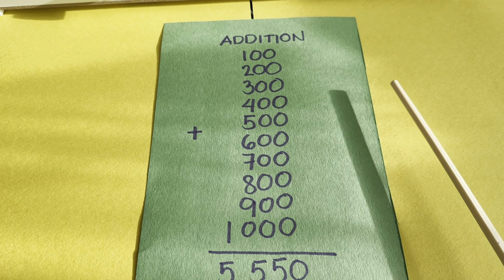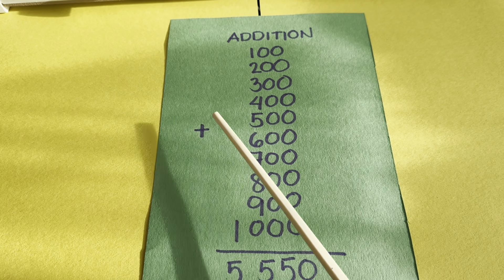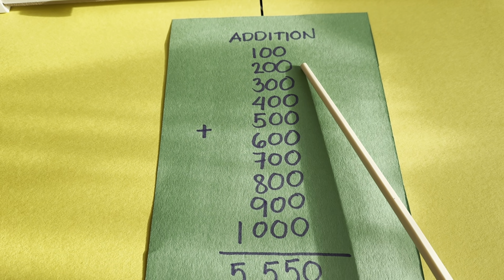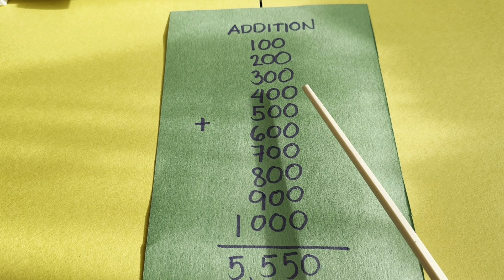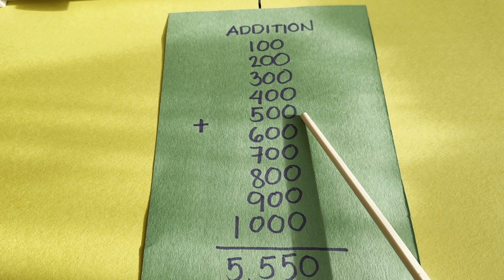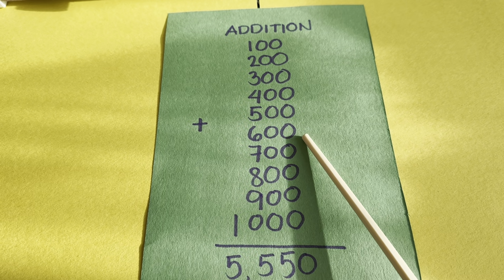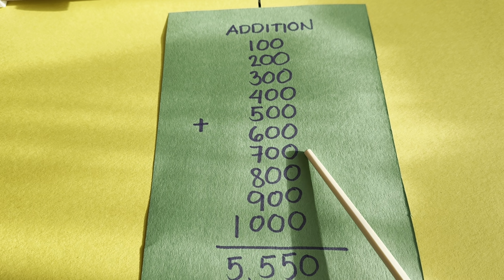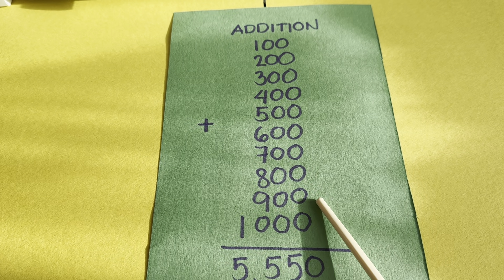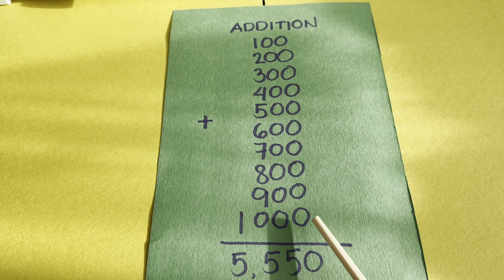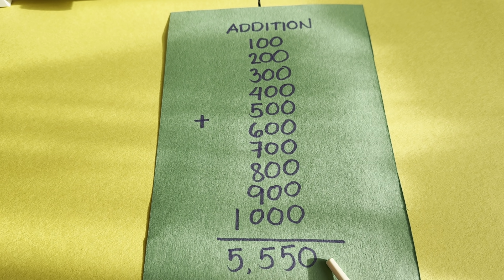And lastly, let's add the following numbers. 100 plus 200 plus 300 plus 400 plus 500 plus 600 plus 700 plus 800 plus 900 plus 1000 is equals to 5550.